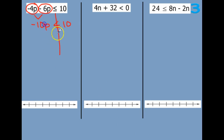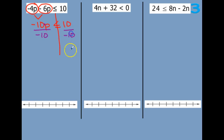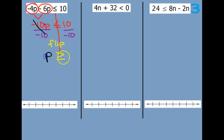Then the opposite of multiplying by negative 10 is dividing by negative 10. Dividing by negative 10 — be careful: whenever you multiply or divide by a negative, you have to flip your inequality symbol. So we have p is now greater than or equal to negative 10 divided by 10, which is flat.